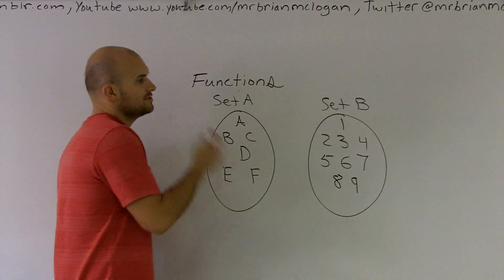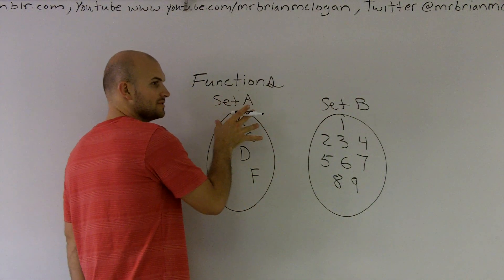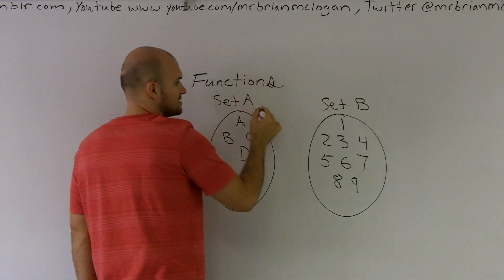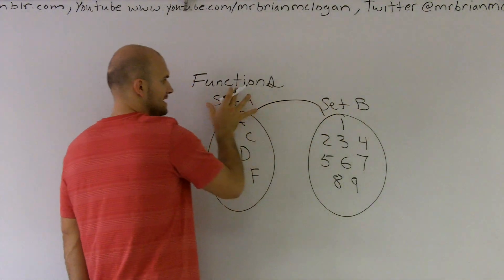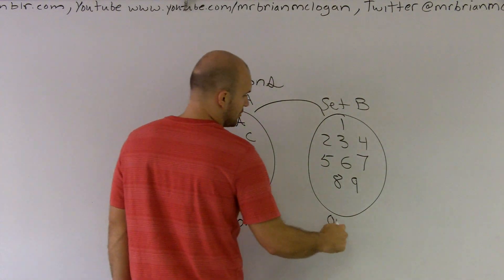For a function relationship to exist, we have a relationship from one set to another set. We have an input, which we'll call this, and then this will be our output.